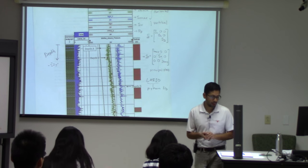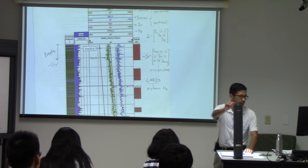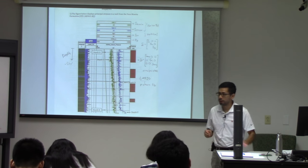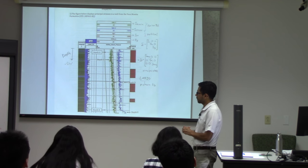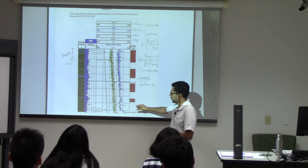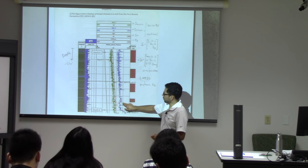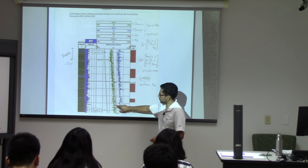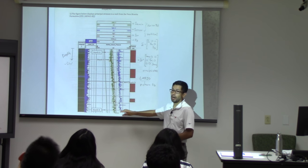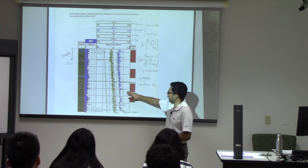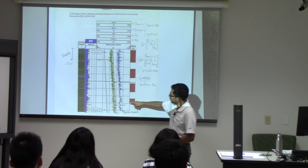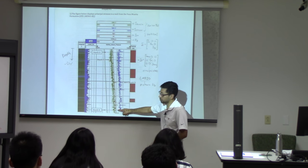To finish the homework, remember the example in this case is we want to understand what is the state of stress at depth for an unconventional formation in which the maximum horizontal stress, the vertical stress, and the minimum horizontal stress are not the same, and also some of those are various functions of depth.